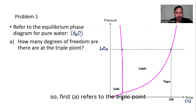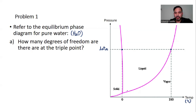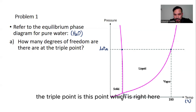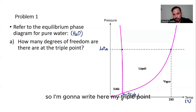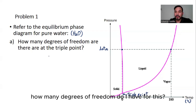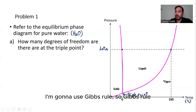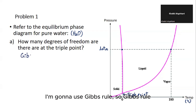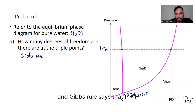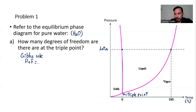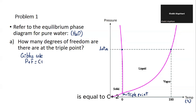Part A refers to the triple point. The triple point is this specific point on the diagram. To find how many degrees of freedom I have, I'm going to use Gibbs' rule.